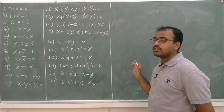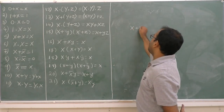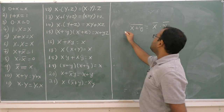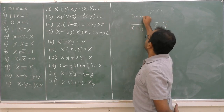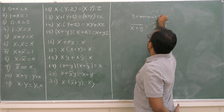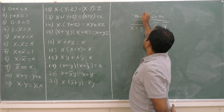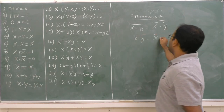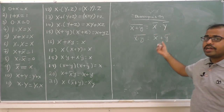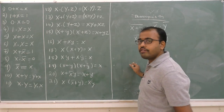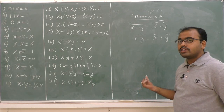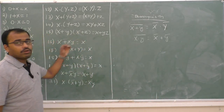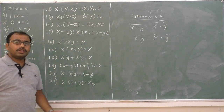In addition to these 21 theorems, there are two more theorems: De Morgan's theorems. De Morgan's theorem states: (x plus y) whole bar is equal to x-bar dot y-bar, and (x dot y) whole bar is equal to x-bar plus y-bar. We can use these theorems to solve algebraic problems. Practice is essential. I will continue the remaining things in the next class. Thank you.